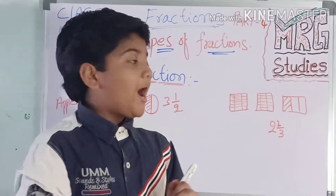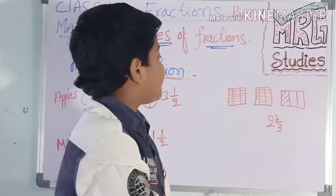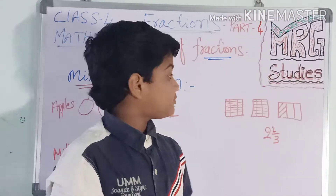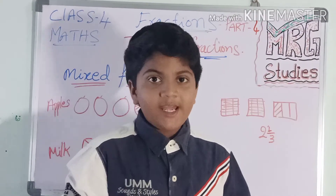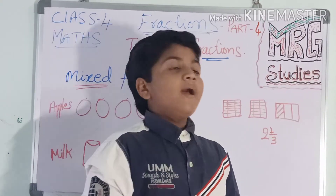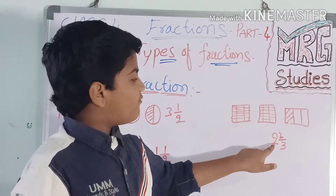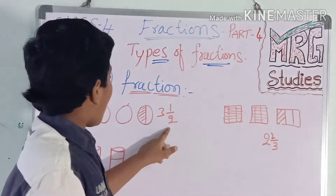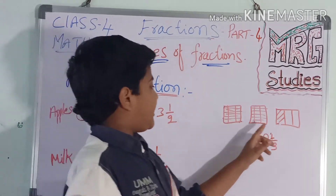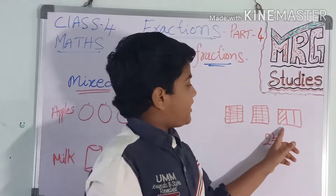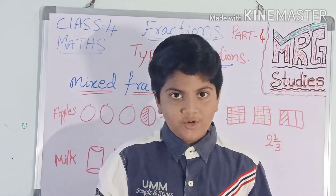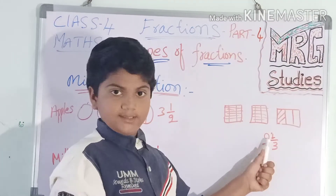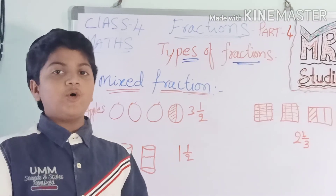Next example: one day I went to the shop and bought three chocolates. I ate two chocolates completely, and from the third chocolate I ate only half and gave the rest to my friend. I ate two and one-third — here three is the number of parts. This is how mixed fractions work.